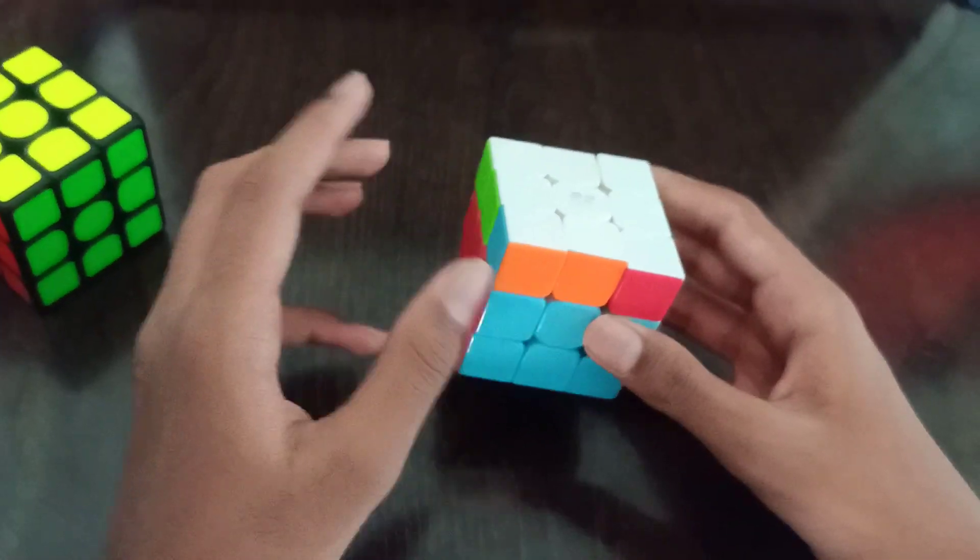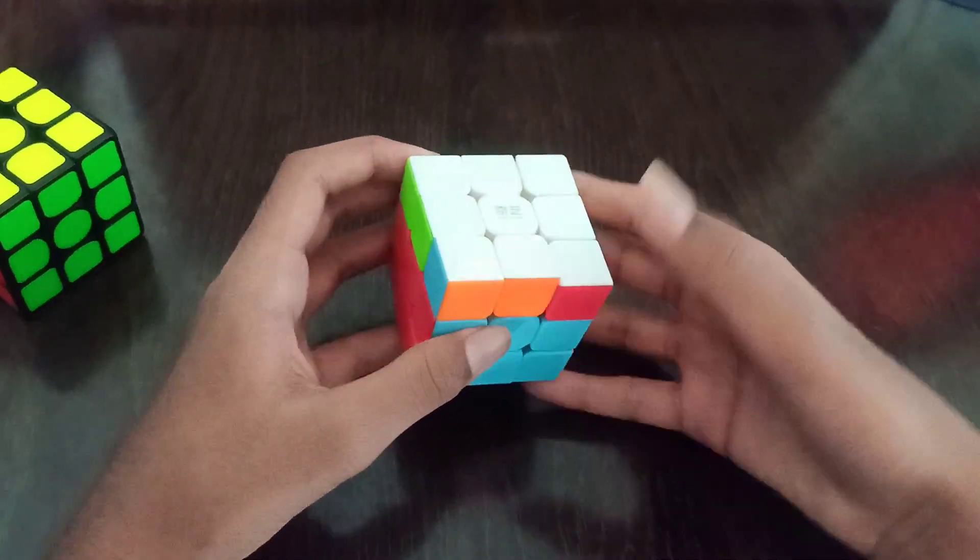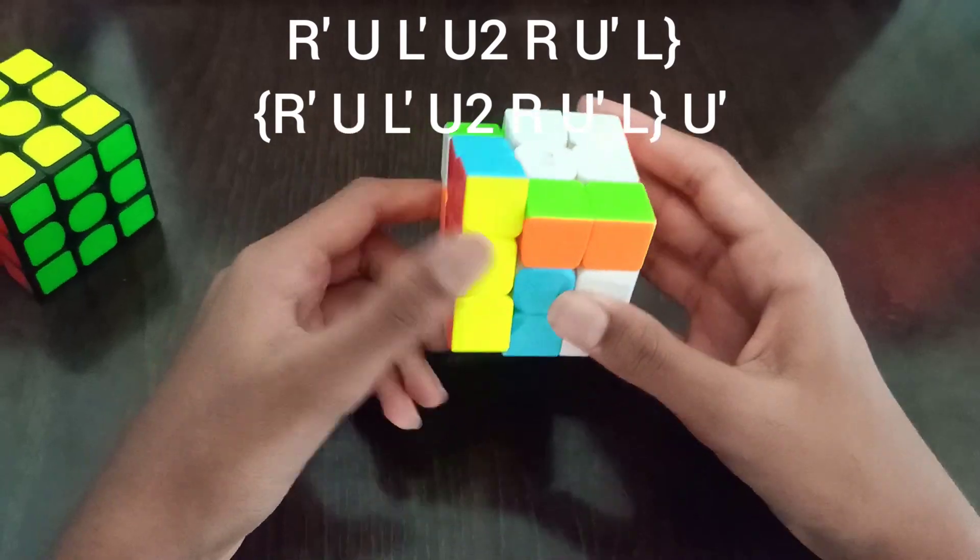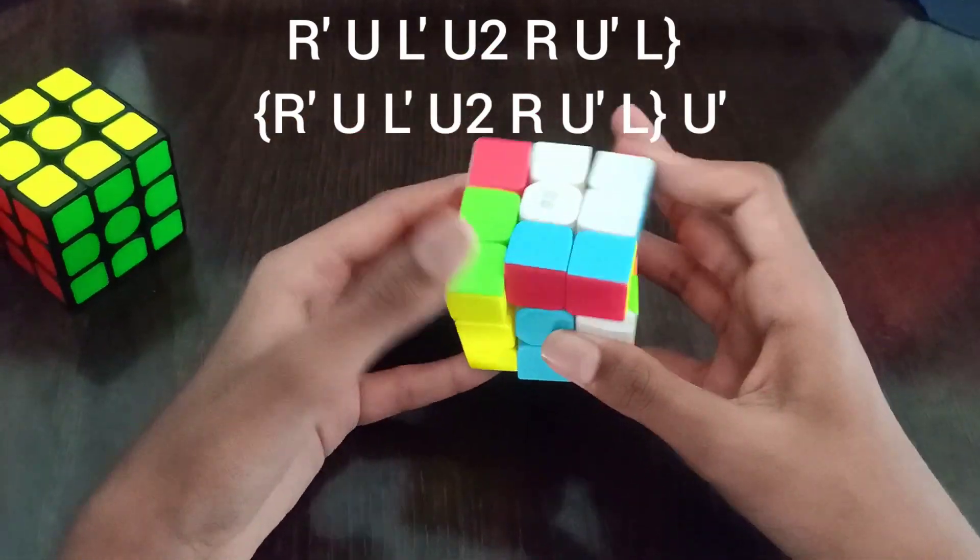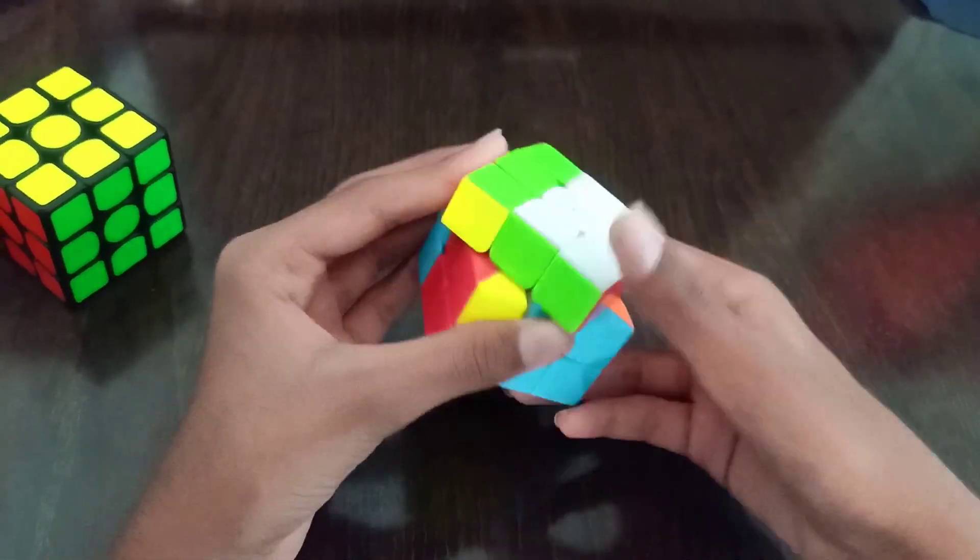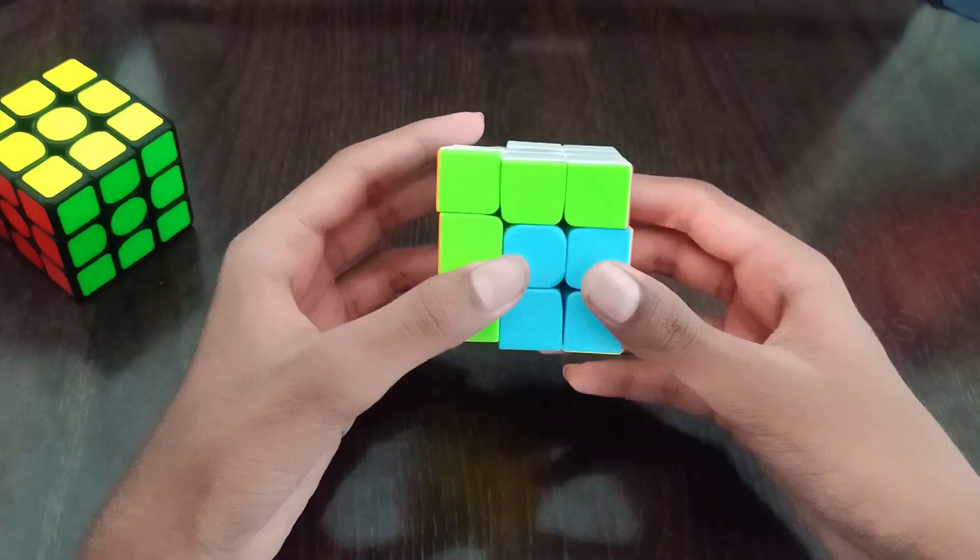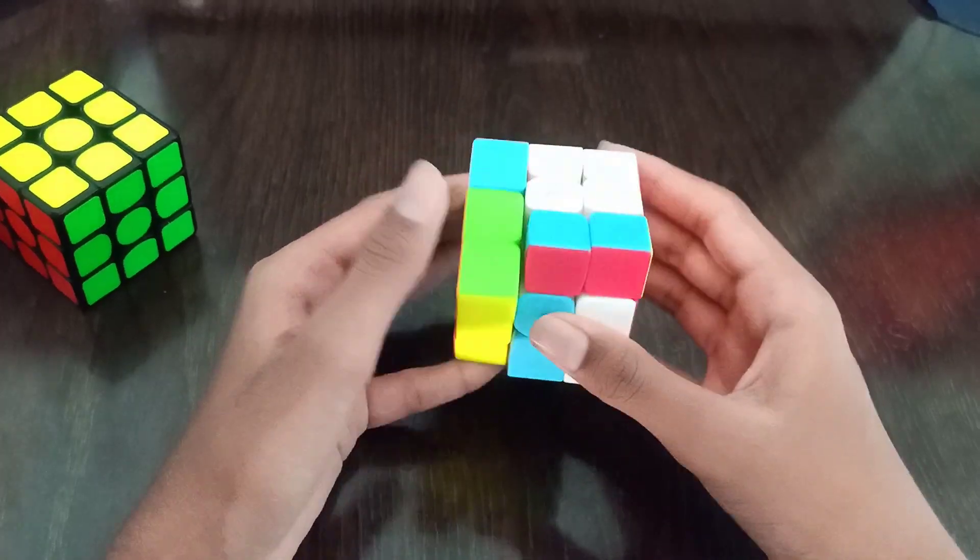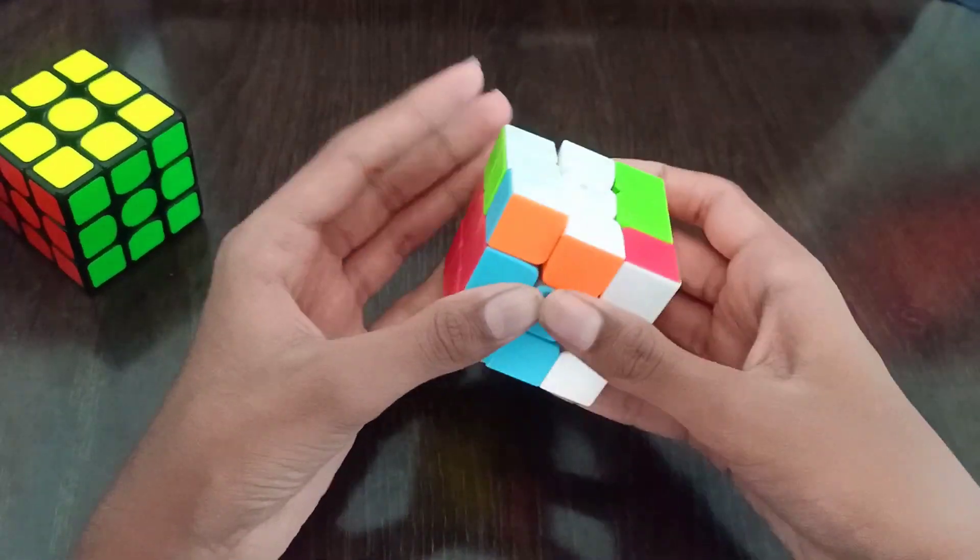There's an alternative algorithm for NB permutation. To memorize it, it's just taking out this pair and inserting in this block, and again taking out this, inserting and doing a U two, and again inserting.